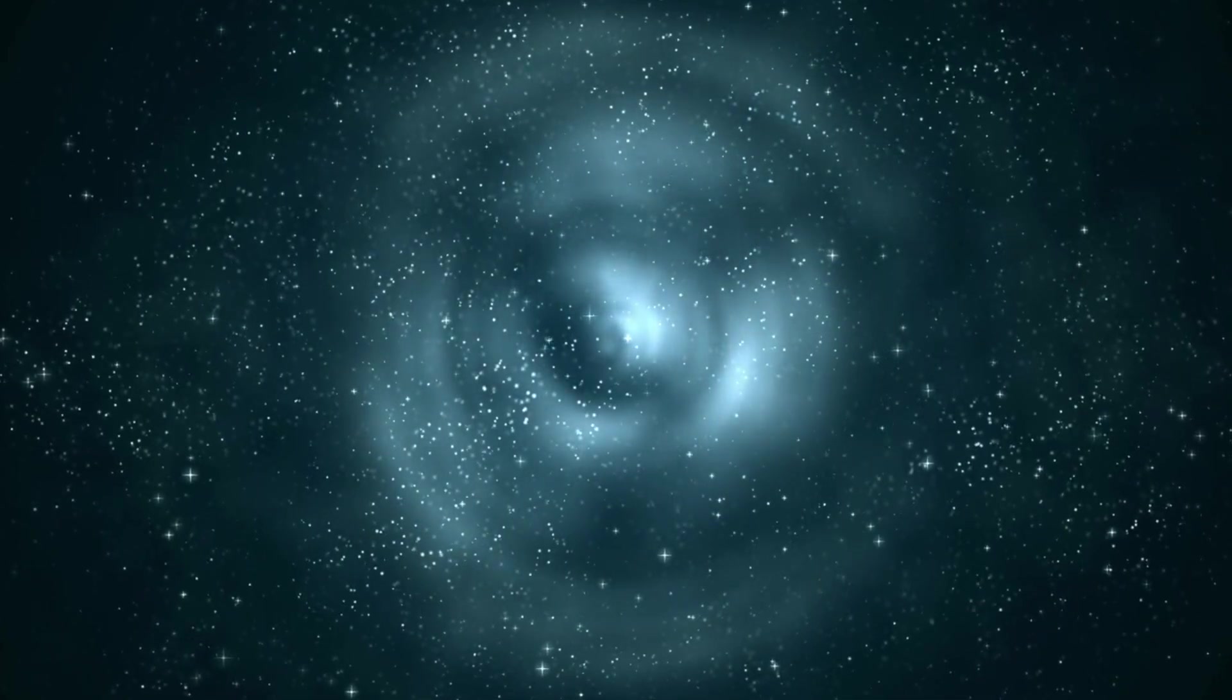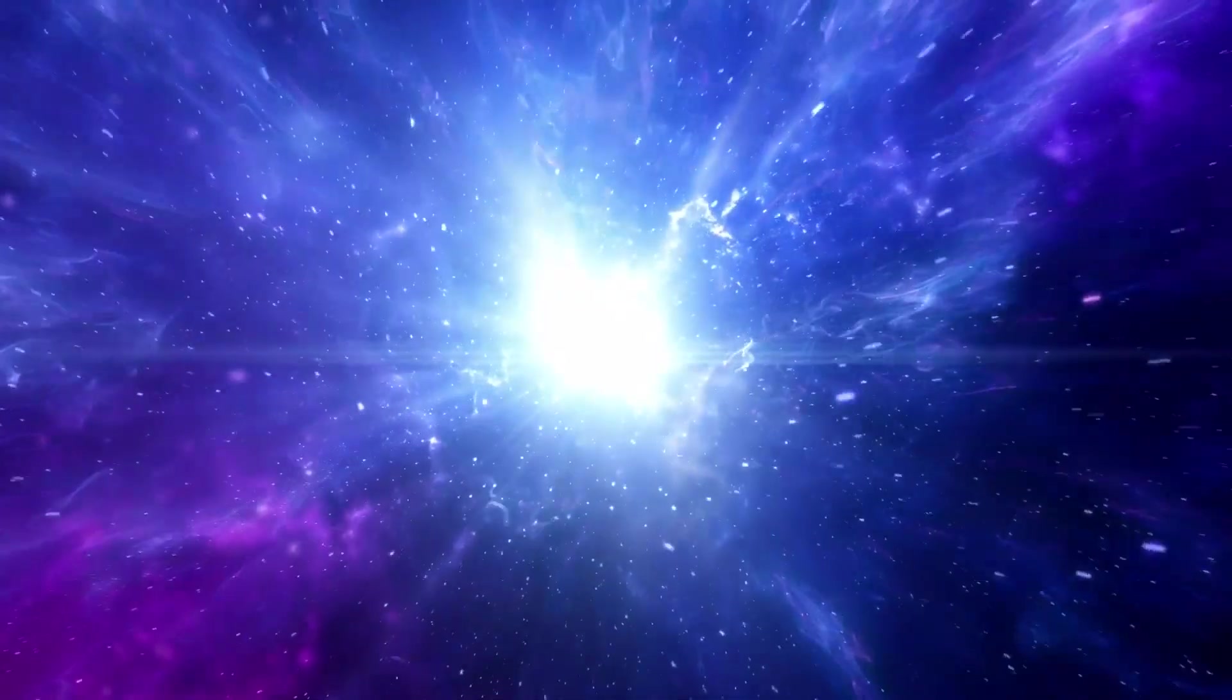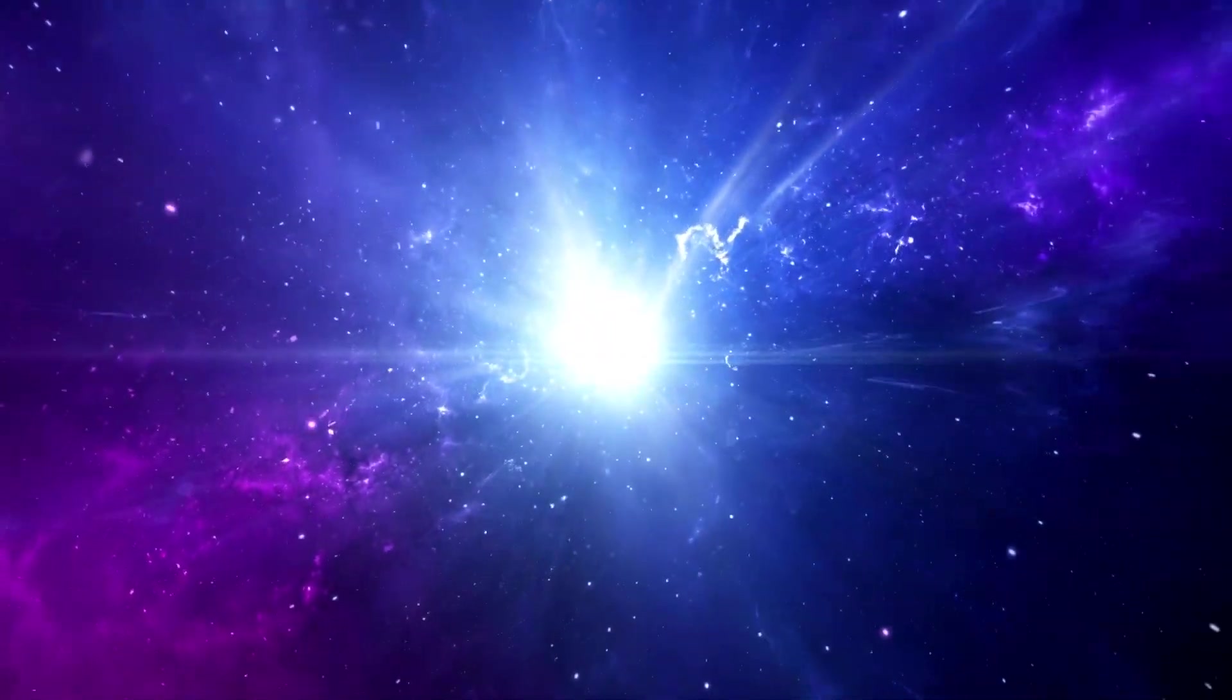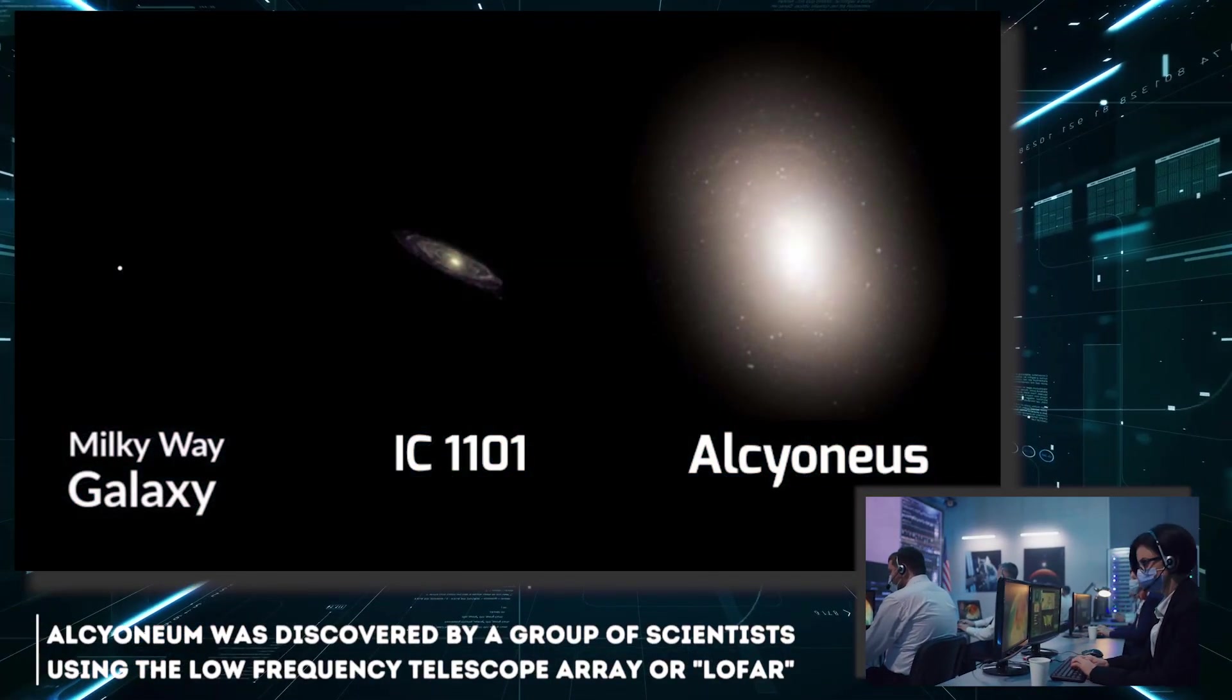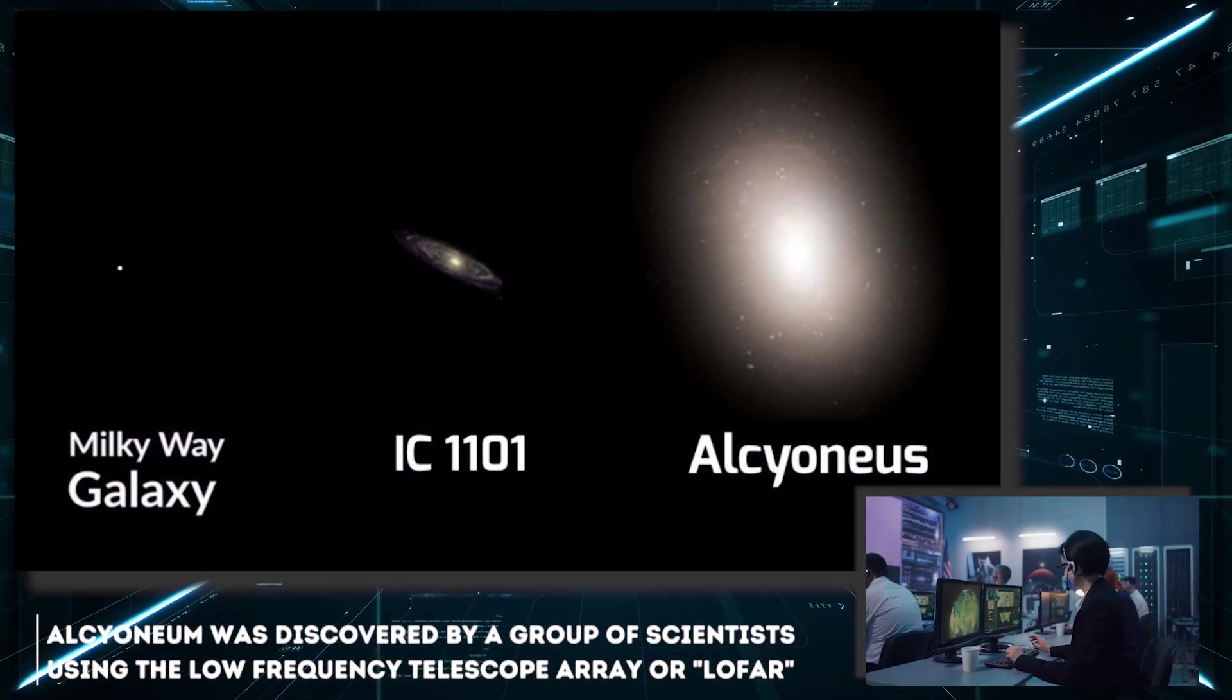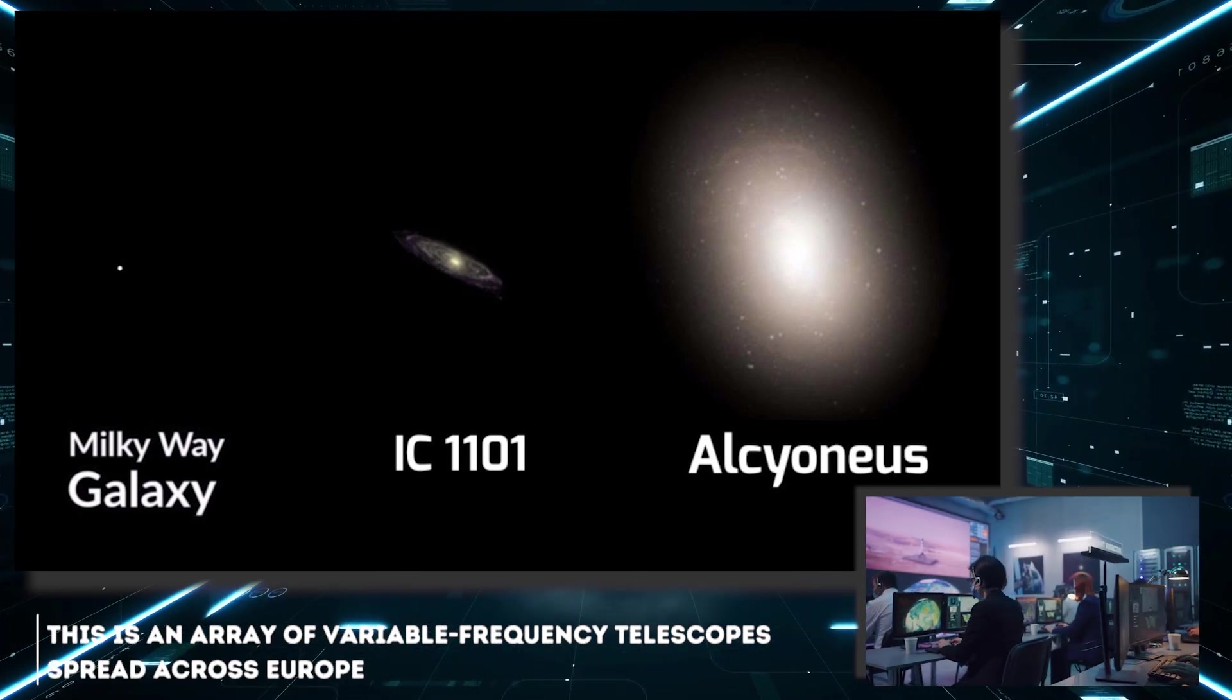Simply put, the galaxy is an ecosystem in itself where a constant cycle of creation and destruction is repeated and respected. At the time, Alcinean was discovered by a group of scientists using the Low Frequency Telescope Array, or LOFAR. This is an array of variable frequency telescopes spread across Europe.